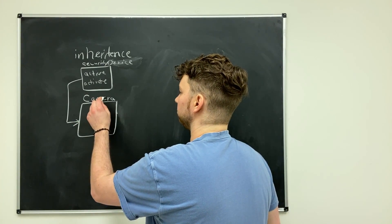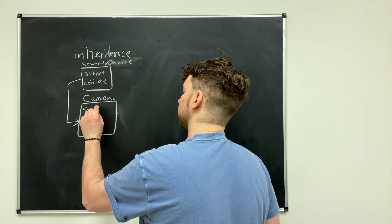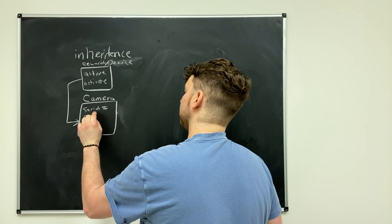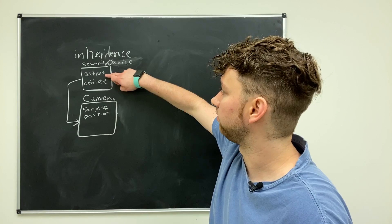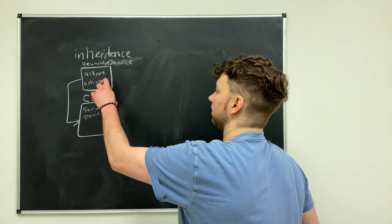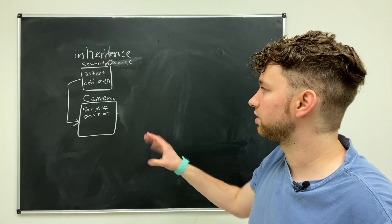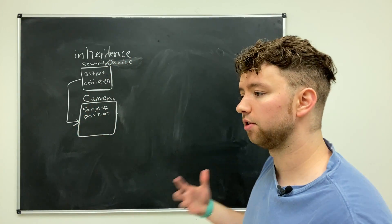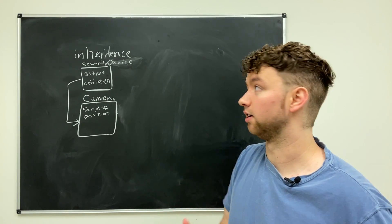So let's define camera a little bit more. Let's say it has a serial number and maybe a position that it's pointing at. Well, right now, every single camera is going to have an active field, an activate method, a serial number, and a position. So why don't we just take these and put them in the camera and then we don't have to worry about the base class. Well, the real benefit here is if you have numerous classes that are all going to have some similarities.